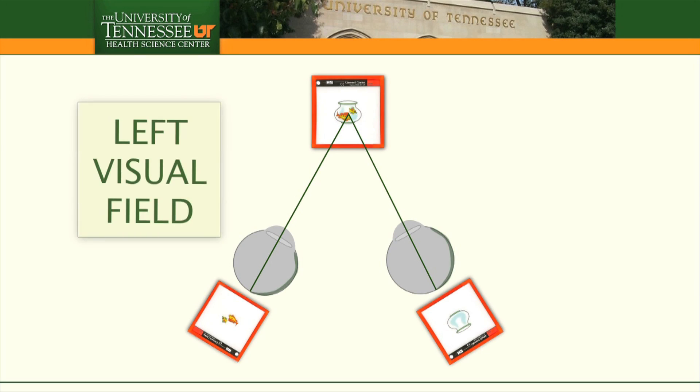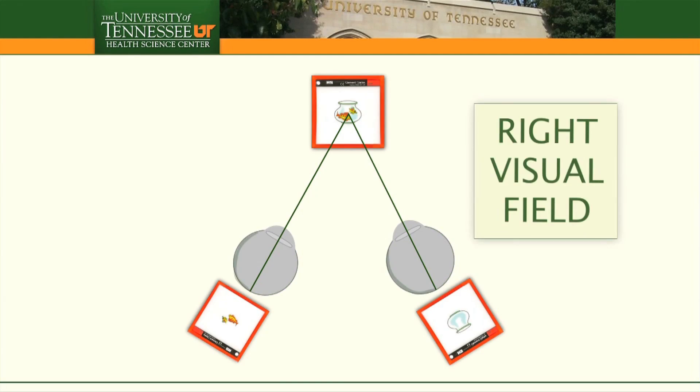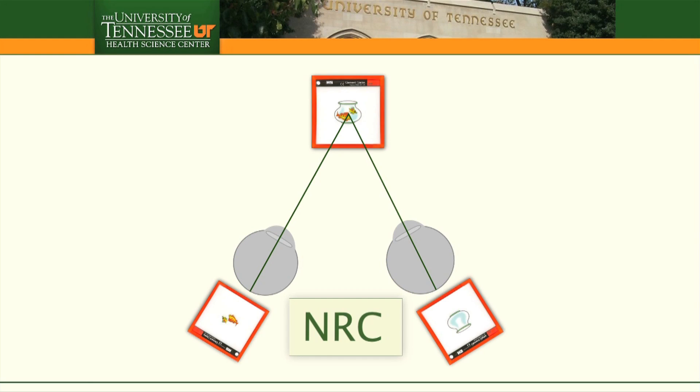The left visual field stimulates nasal retina in the left eye and temporal retina in the right eye. The right visual field stimulates temporal retina in the left eye and nasal retina in the right eye. This is known as normal retinal correspondence.